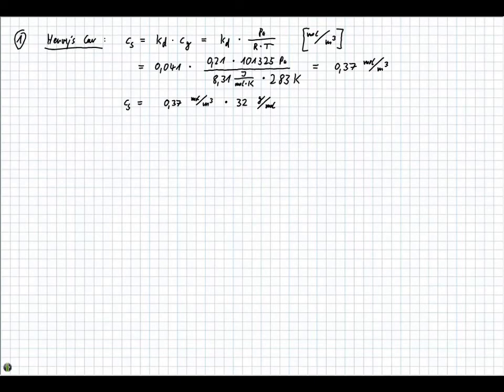Since we have an O2 molecule, it's 2 times 16. And this gives us 11.9 grams per cube, which is equal to 11.9 milligrams per liter.